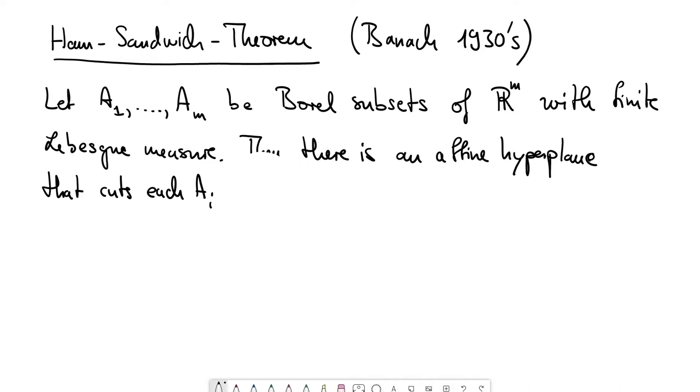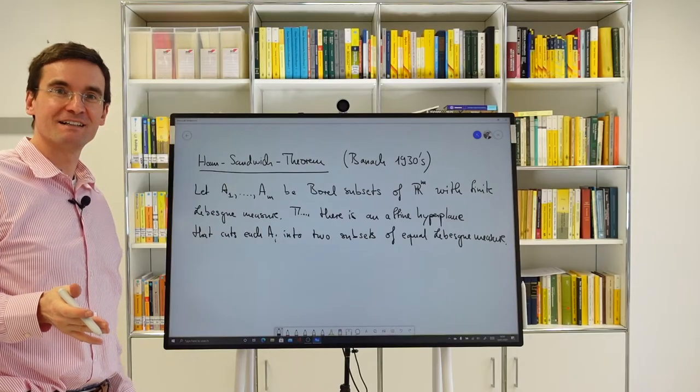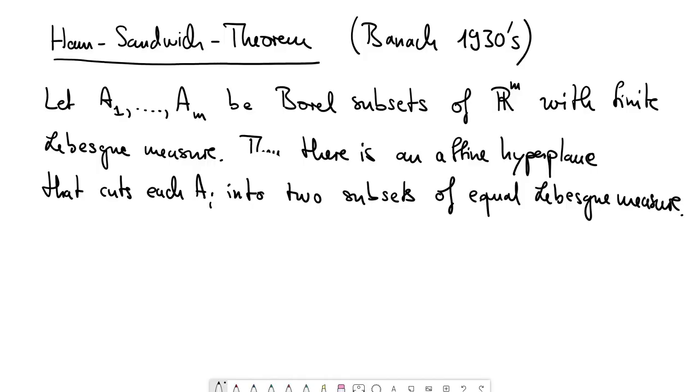For M equals two, if you have two two-dimensional figures in R squared, then the bisecting hyperplane is a line. It could be something like this hyperplane approximately.